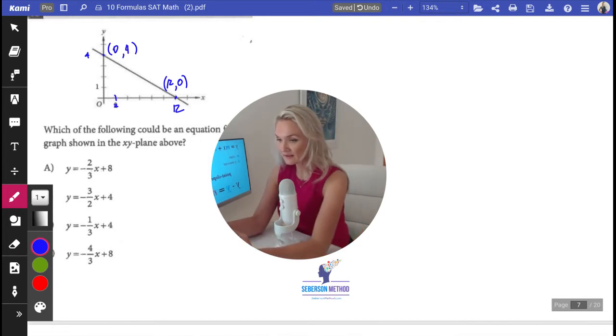So it's going to be negative 4 over 12. And that is also known as negative 1 third.